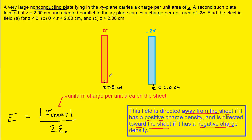We've drawn a basic picture representing the information in the question. We have our first non-conducting plate with a charge per unit area of sigma located in the xy plane, and our second non-conducting plate with a charge per unit area of negative 2 sigma located at z equals 2 centimeters. In part A, we determine the electric field for three different distances.